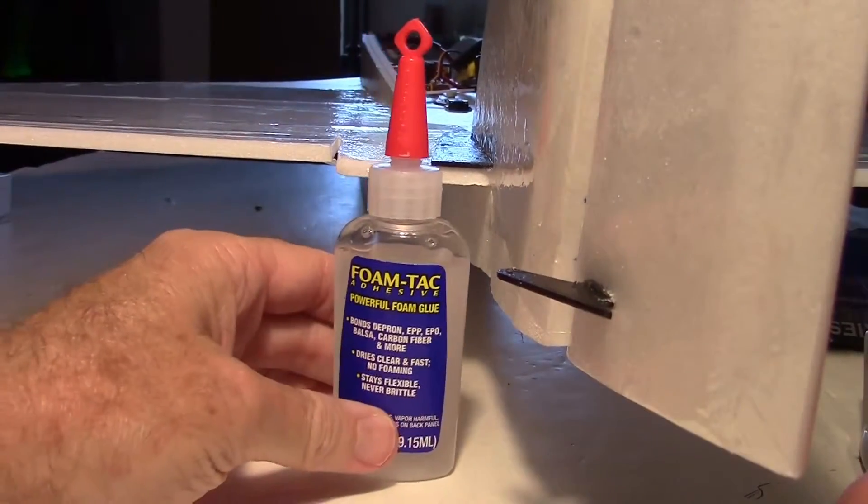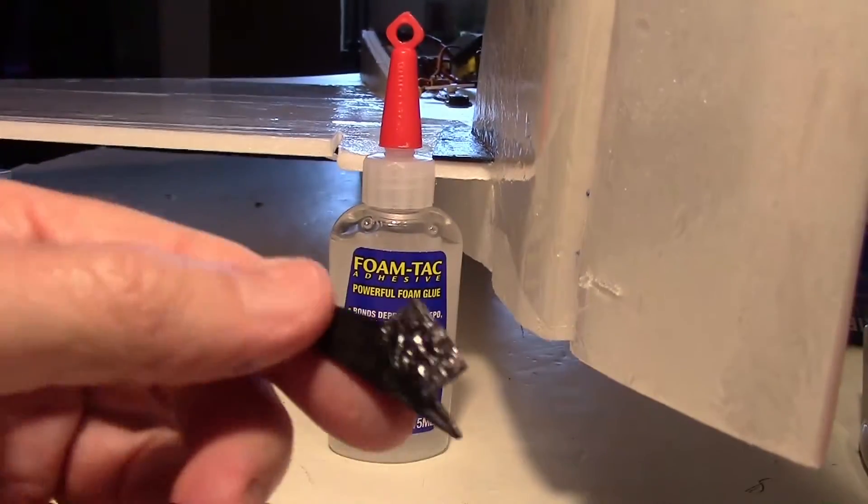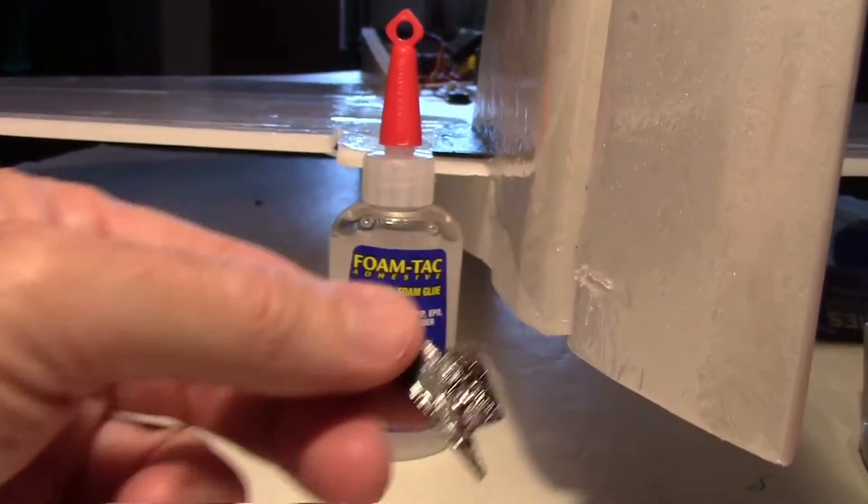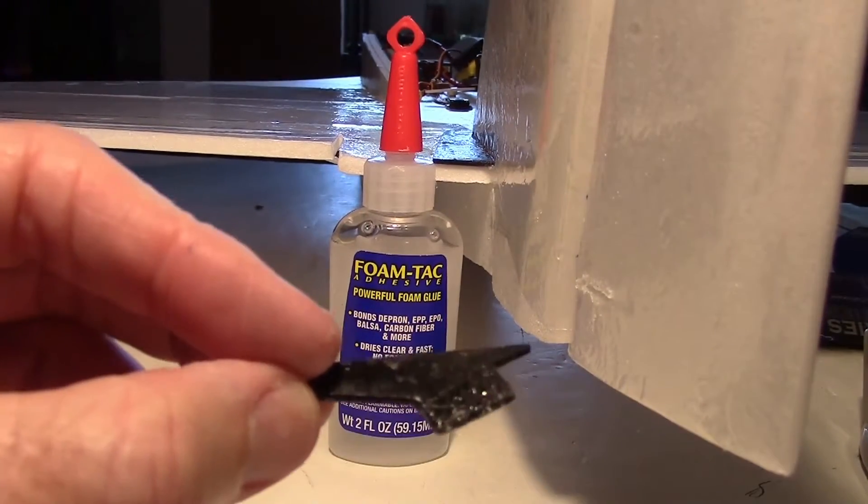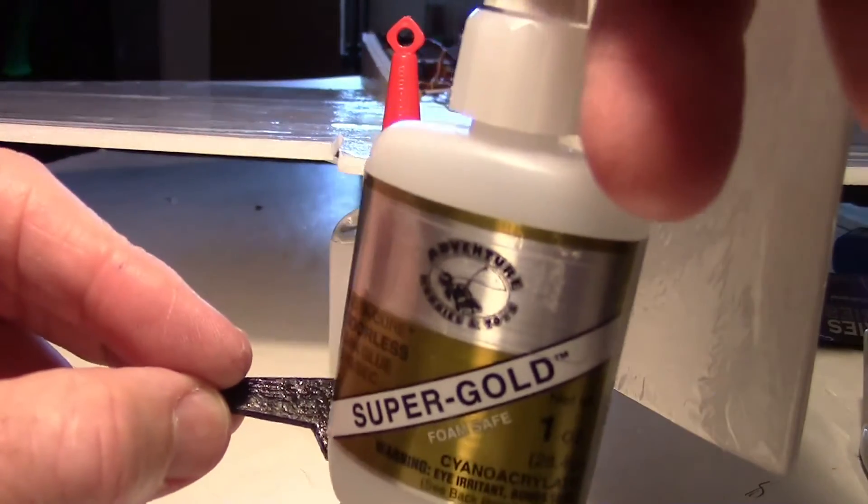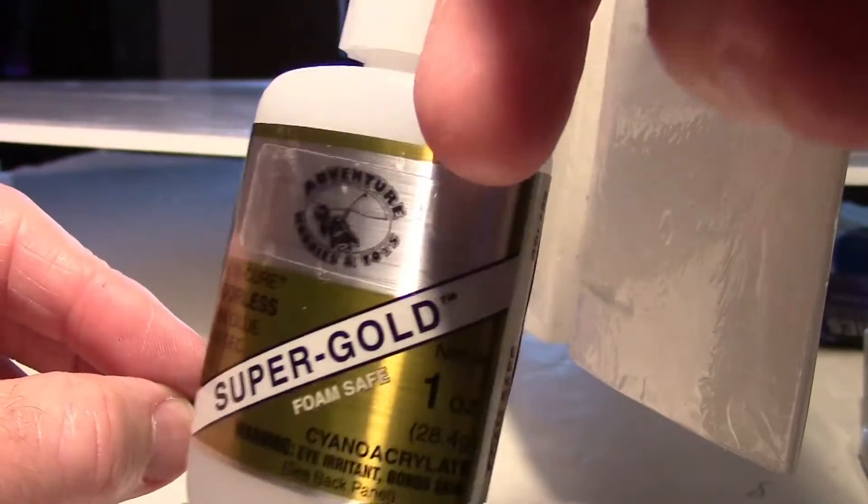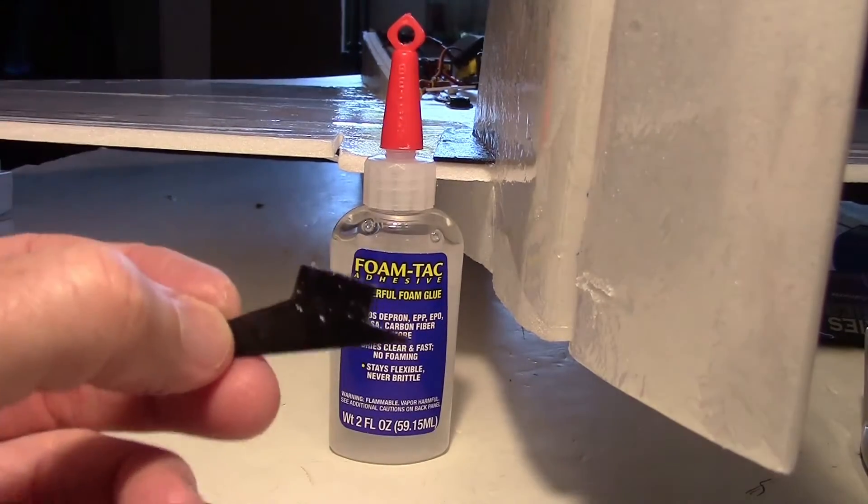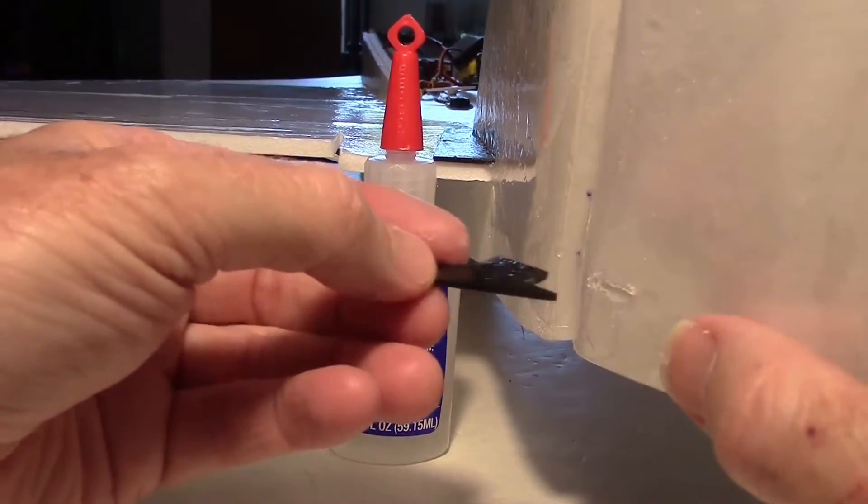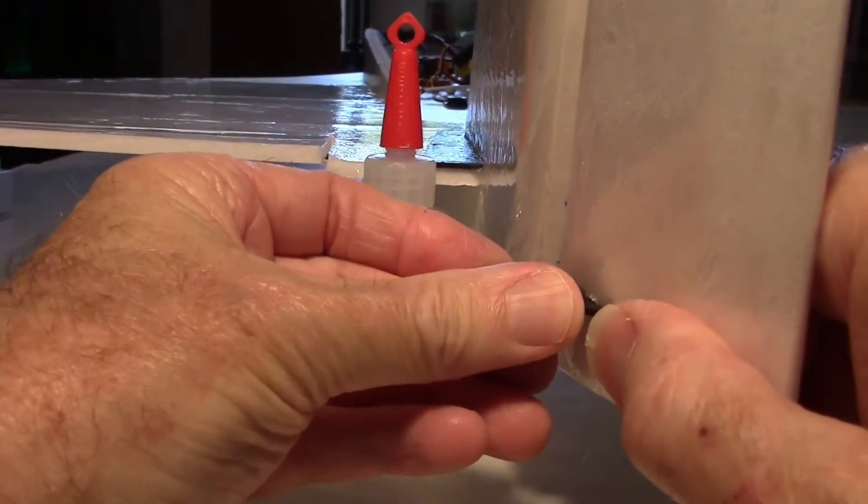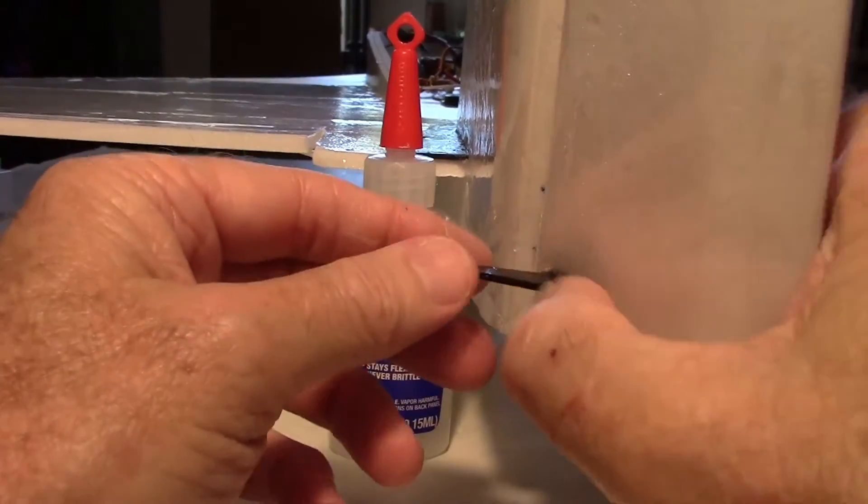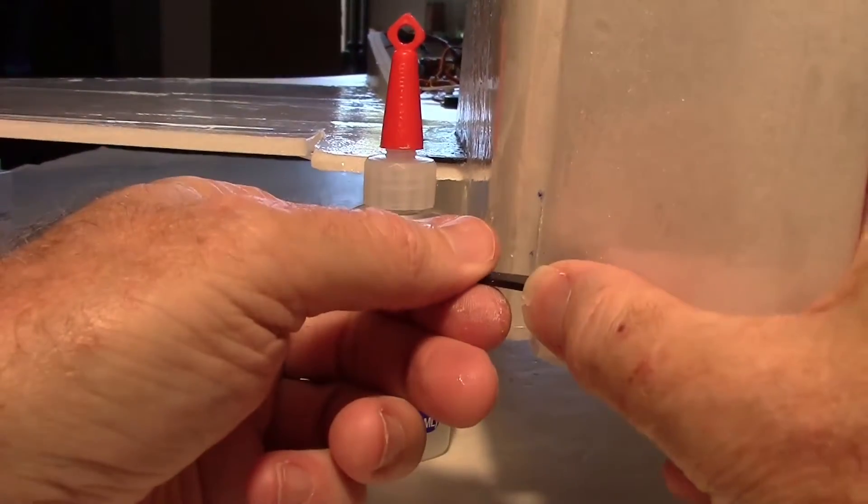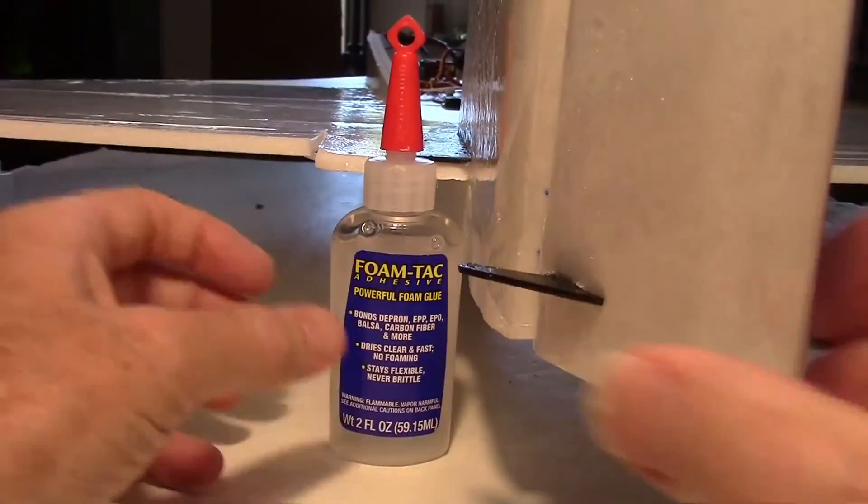Now I'm going to get ready to glue in the control horn with some of this foam tack. I've already applied some foam tack to it, just letting it tack up a little bit. I also coated this plywood that came with the model with some super glue, some medium super glue. That just strengthens the wood a little bit. I'd already previously painted it black. So I'm going to go ahead and put it in there. For the other control surfaces I may use some nylon control horns, but for the rudder I think this will do just fine, the one that came with the kit. I'll just put that in there and let it dry.